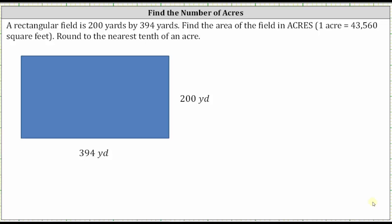A rectangular field is 200 yards by 394 yards. Find the area of the field in acres, where one acre is equal to 43,560 square feet. And we're told to round to the nearest tenth of an acre.